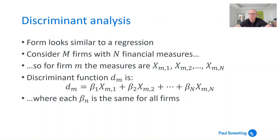What those betas are essentially doing is giving more weight to the different measures which are going in opposite directions, to push them in the same direction. They also perform a scaling function to make sure that any variable of a different order of magnitude than the others is brought towards the same order of magnitude. So the betas ensure that all of the x's are pushing in the right direction for the firms in the different groups.